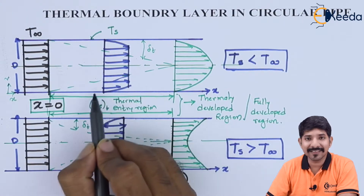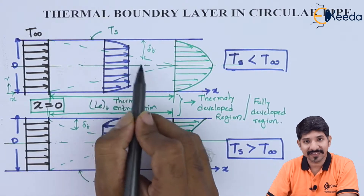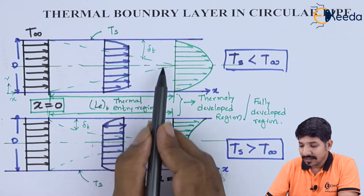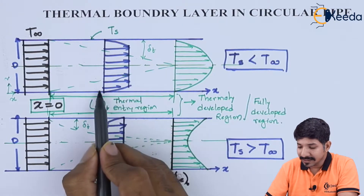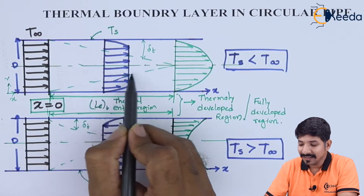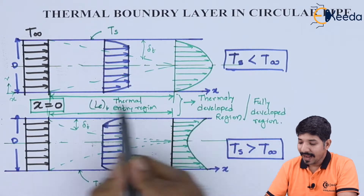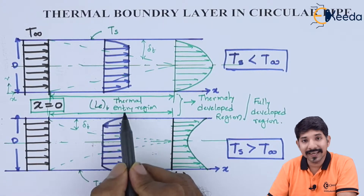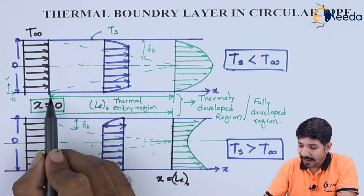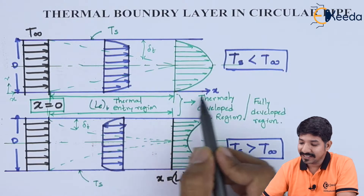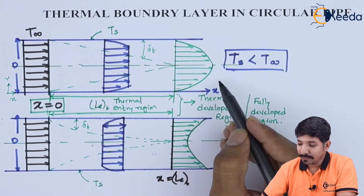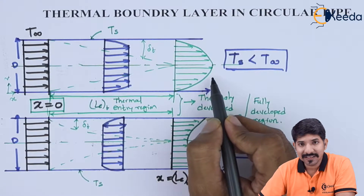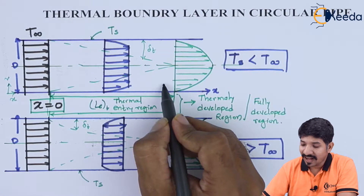Since the region is not fully developed, the temperature variations are abrupt. The temperature gradient will be higher at the boundary and lesser at the center of the pipe. As we go to a distance L_e — the thermal entry length — at the end of this length we will have a proper thermal boundary layer, where the temperature gradient exists uniformly at distance r from the center.